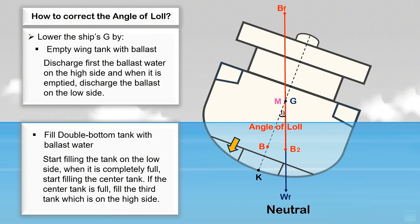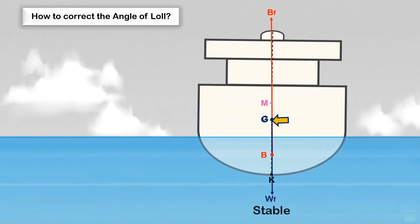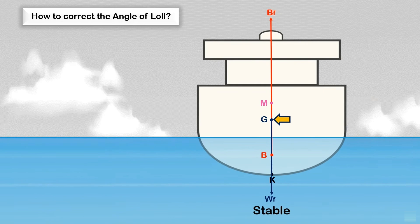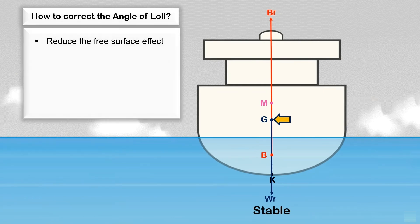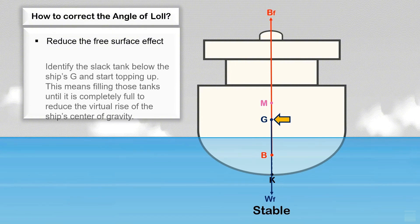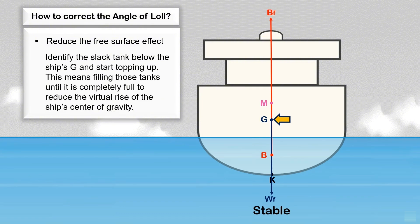If all tanks are completely full and the ship's center of gravity is below the metacenter, the ship will return to its upright condition. Another way to correct the angle of loll is to reduce the effect of free surfaces due to slack tanks — identify the slack tank below the ship's G and start topping it up, meaning filling those tanks until completely full, to reduce the virtual rise of the ship's center of gravity. That is all for now — I hope you found this video helpful. Thank you for watching.